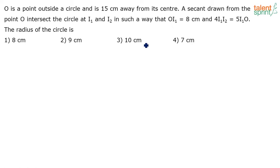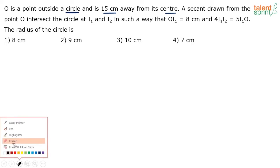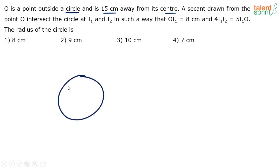Let's draw the diagram to understand what's happening. O is a point outside the circle, 15 centimeters away from its center C. Let's say this is the circle with center C, and O is the external point. The distance between C and O is 15 centimeters.